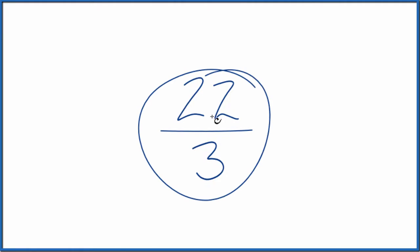Let's write the fraction 22 thirds as a mixed number. So here's how we do it. We divide 3 into 22.